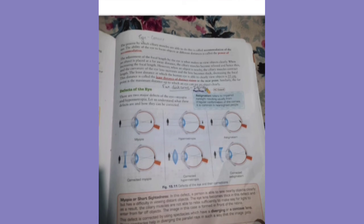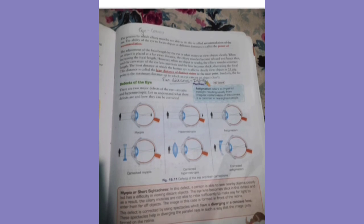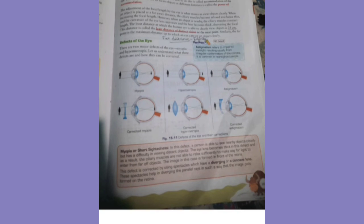Accommodation refers to the change in focal length achieved by contraction or relaxation of the ciliary muscles, which changes the thickness of the eye lens and thereby its converging power. The least distance of distinct vision is normally taken as 25 cm — this is the minimum distance at which a normal eye can focus without straining, meaning without putting extra effort or stress on the eyes.